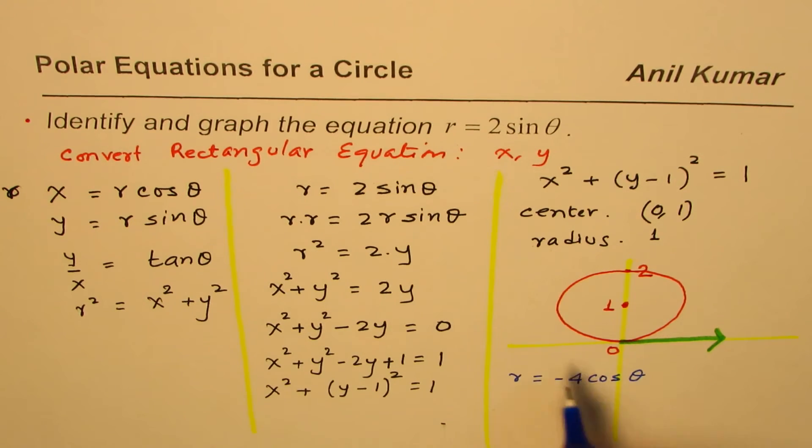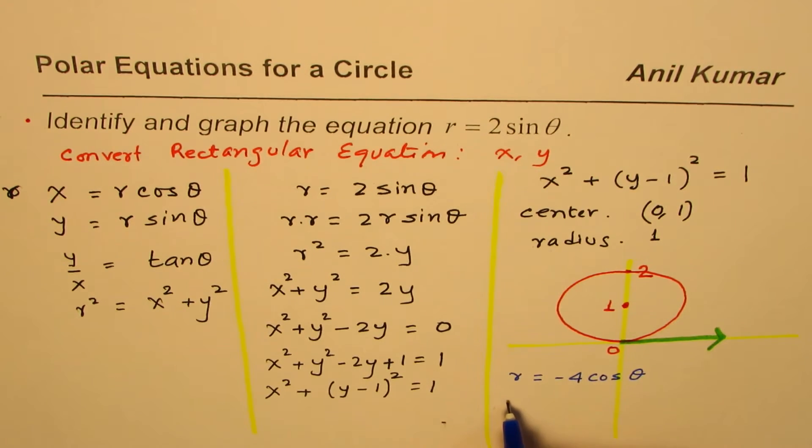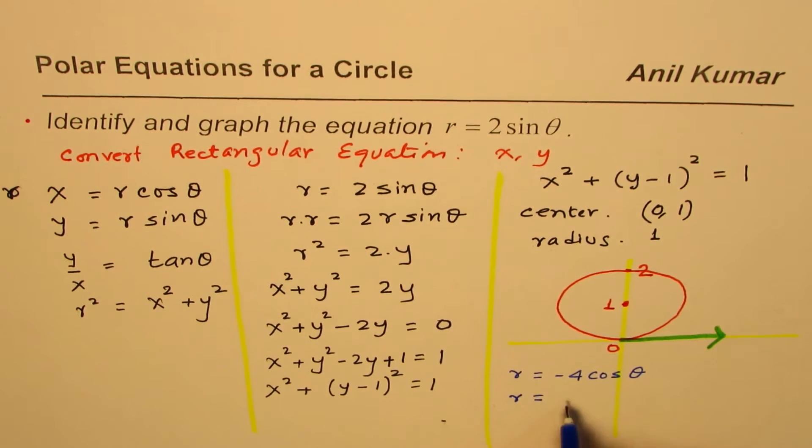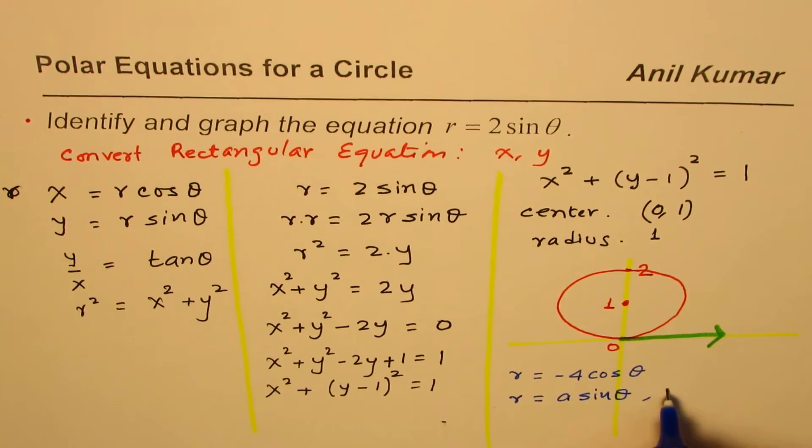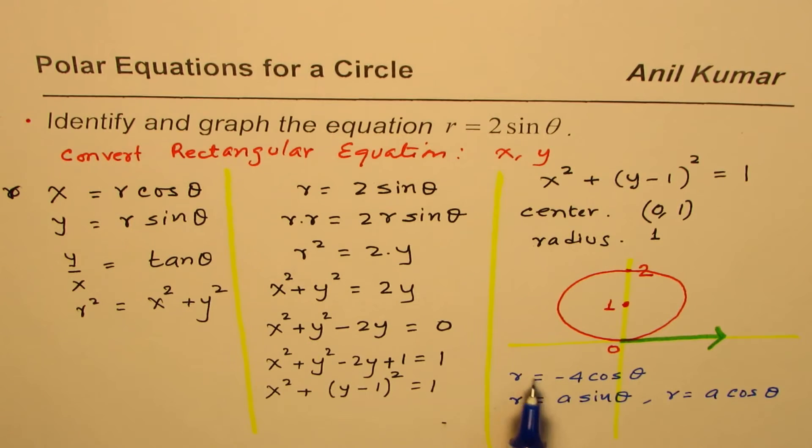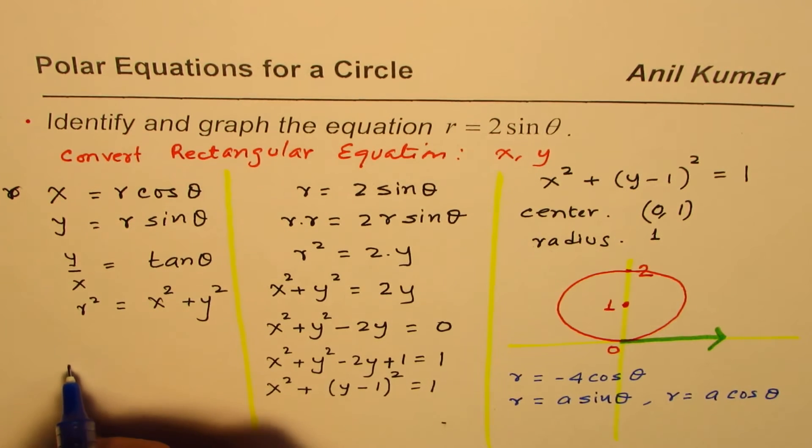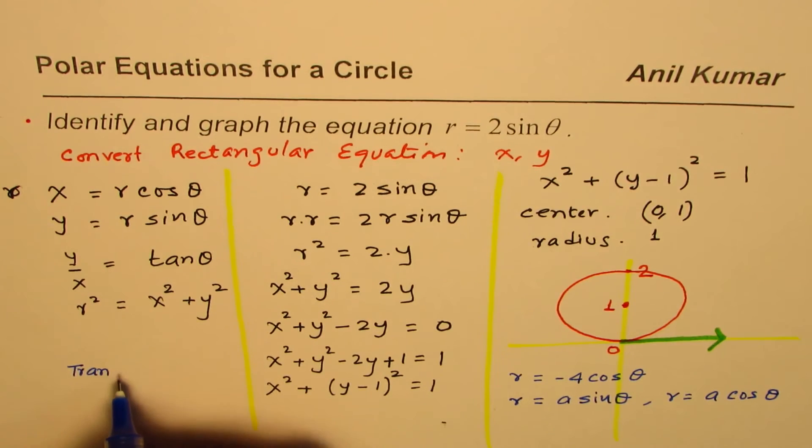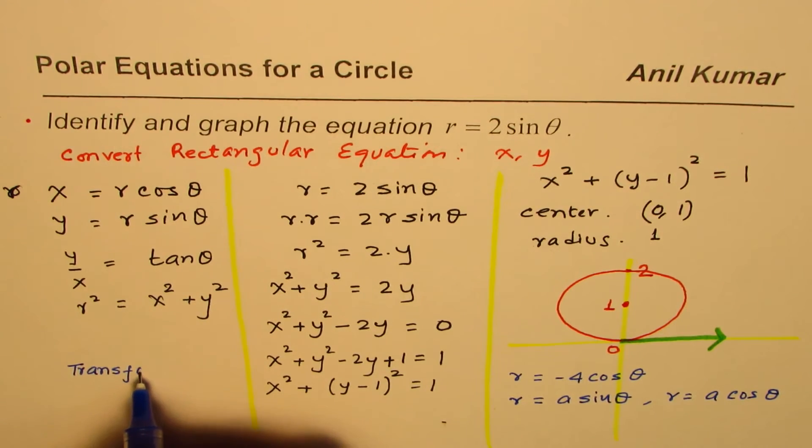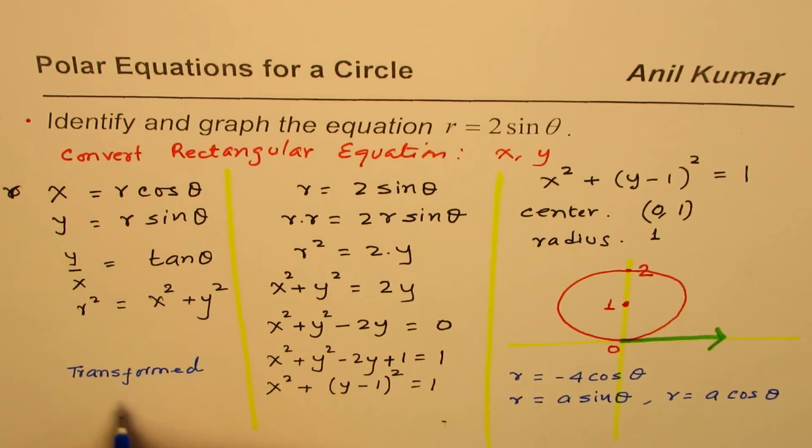What happens is, if you sketch graphs of such equations which are of the form r equals a sine theta, or r equals a cosine theta, what will you notice? You will notice that all of these graphs result into one thing, that is a translated or transformed circle.